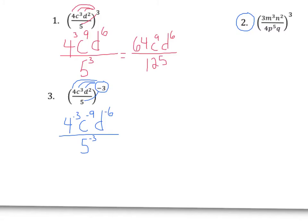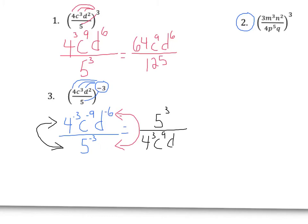All of that will be over five to the negative third. When we talked about negative exponents, we took the reciprocal. Anything with a negative exponent in the numerator will flip down to the denominator, and anything with a negative exponent in the denominator will flip up to the numerator. So we will be left with five to the third over four to the third times c to the ninth times d to the sixth.